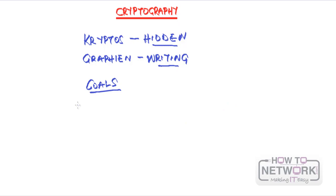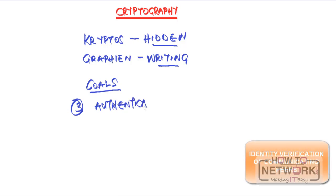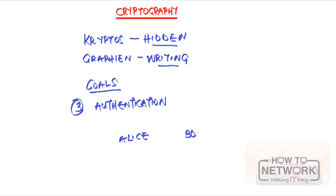The third goal of cryptography is authentication. Authentication just means that when Bob receives a message from Alice, Bob should have a way of knowing that he's talking to Alice and not talking to Eve. So authentication is about identifying a user — just making sure that you're talking to the correct user.